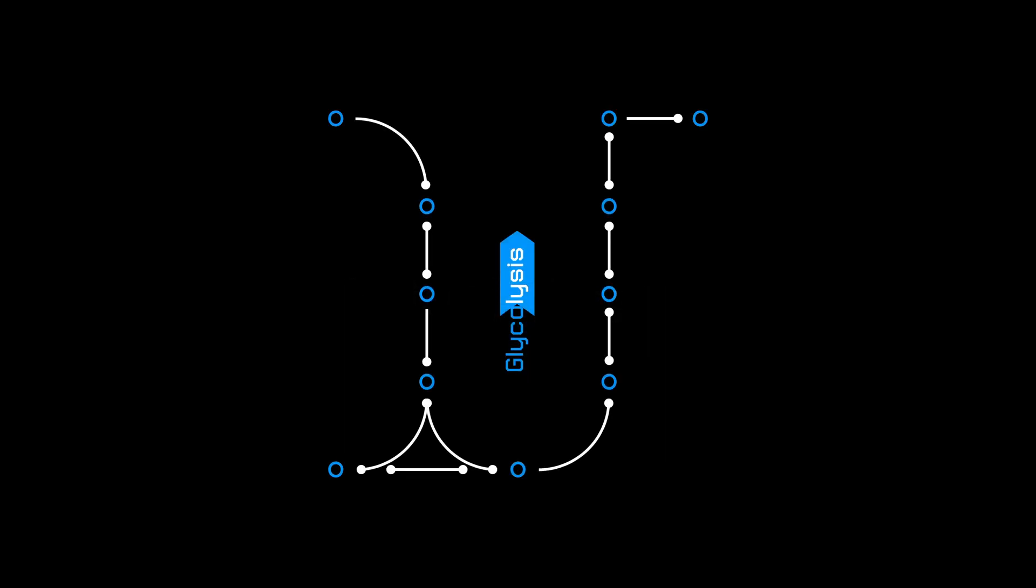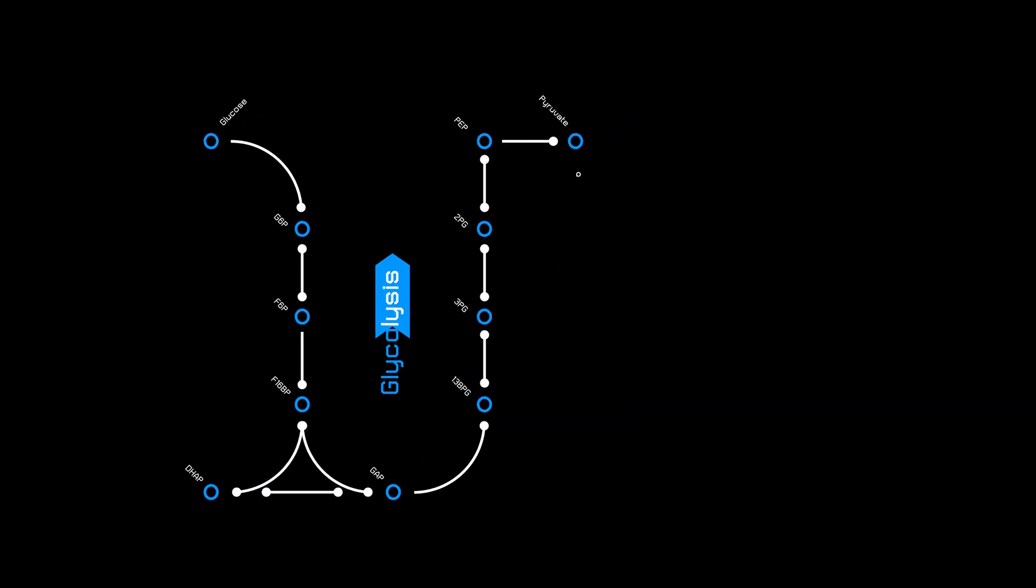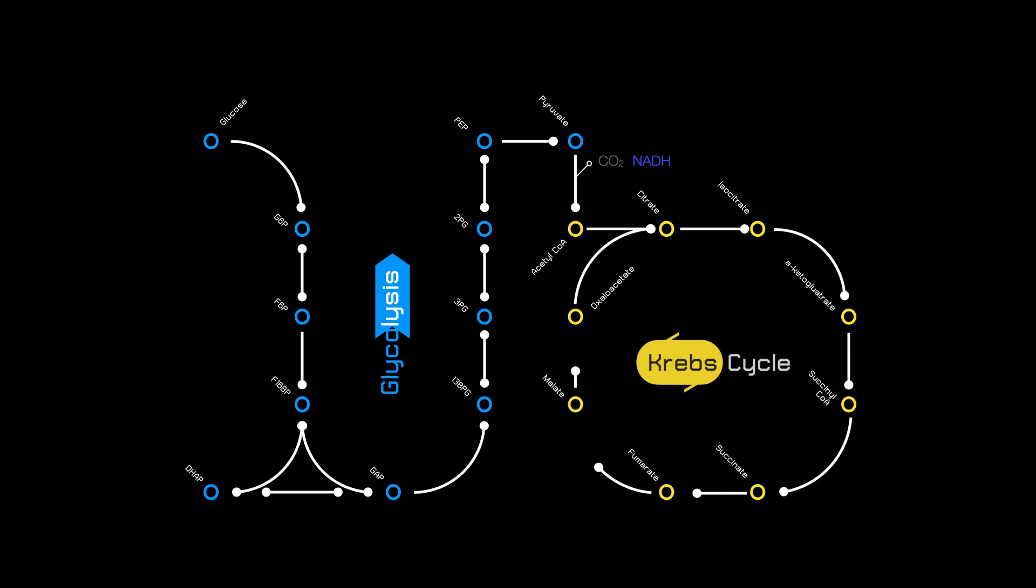Glycolysis breaks down glucose into smaller carbons while letting off a bit of energy. The Krebs cycle extracts the rest of that energy, leaving behind the sugar's corpse in the form of CO2.